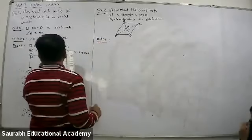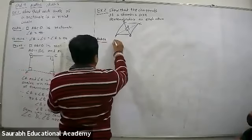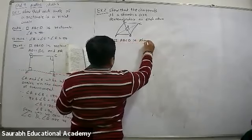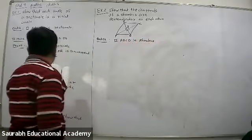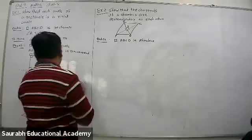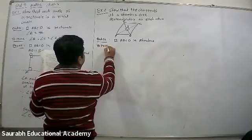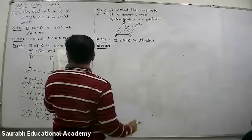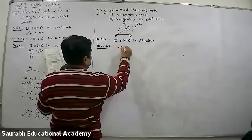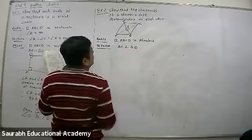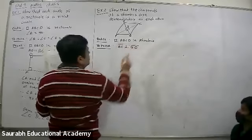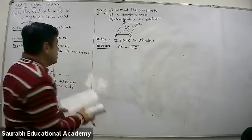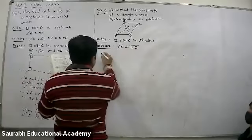Now, data. Data: ABCD is rhombus. To prove AC is perpendicular to BD. This is what you want to prove. Diagonals are perpendicular to each other. AC is perpendicular to BD. Proof.